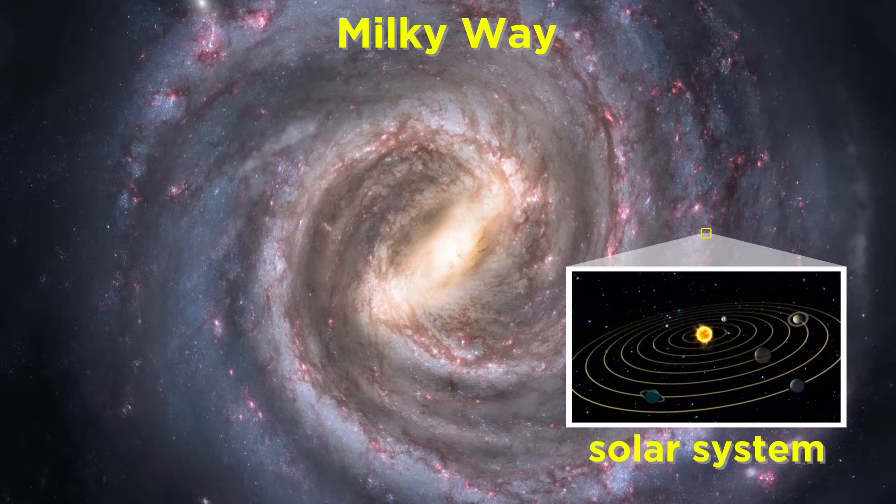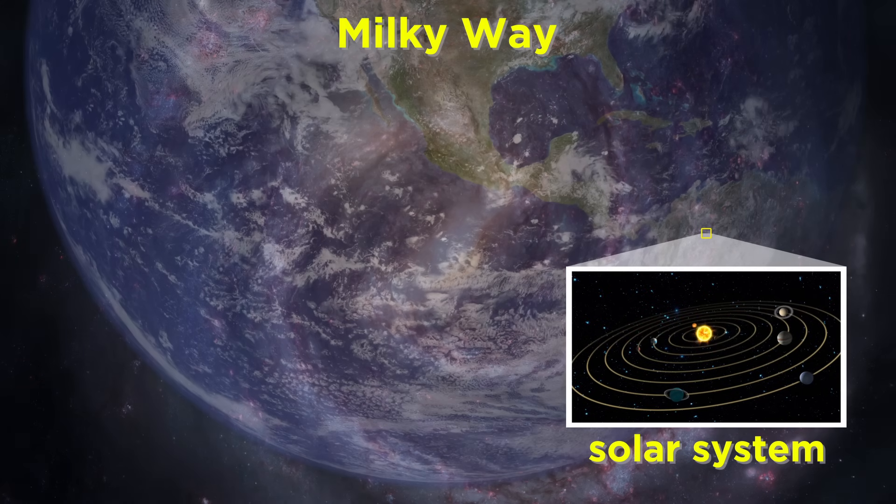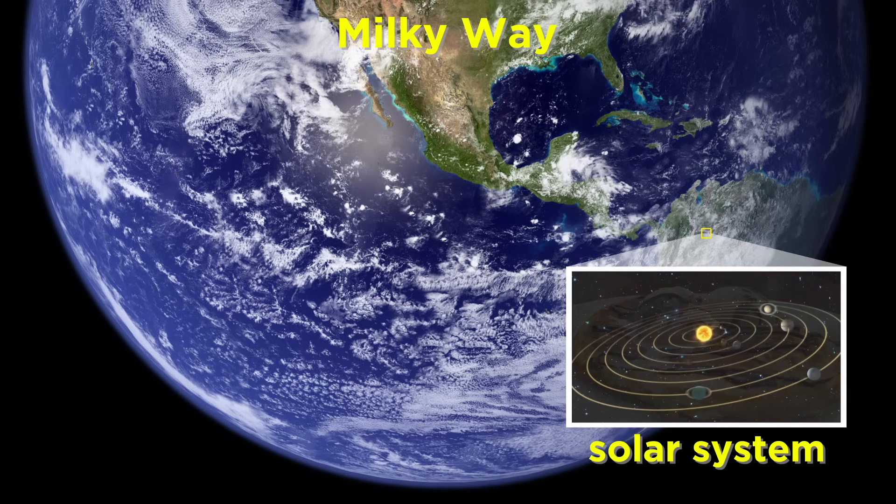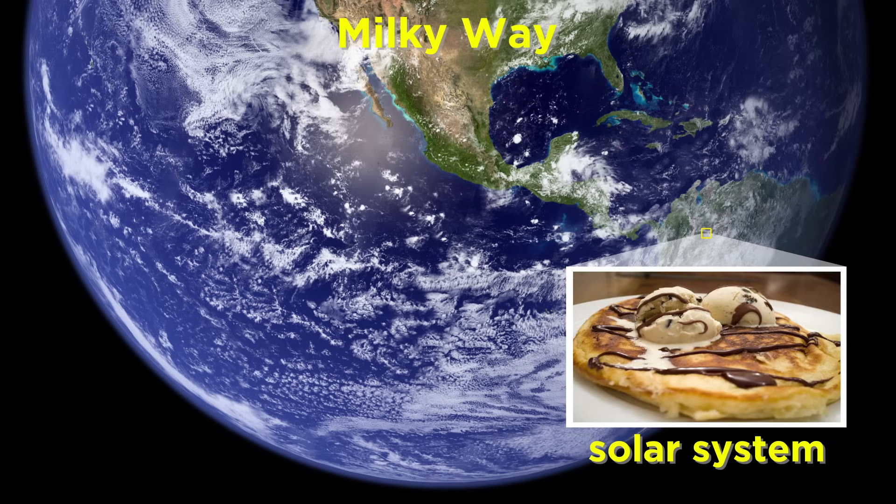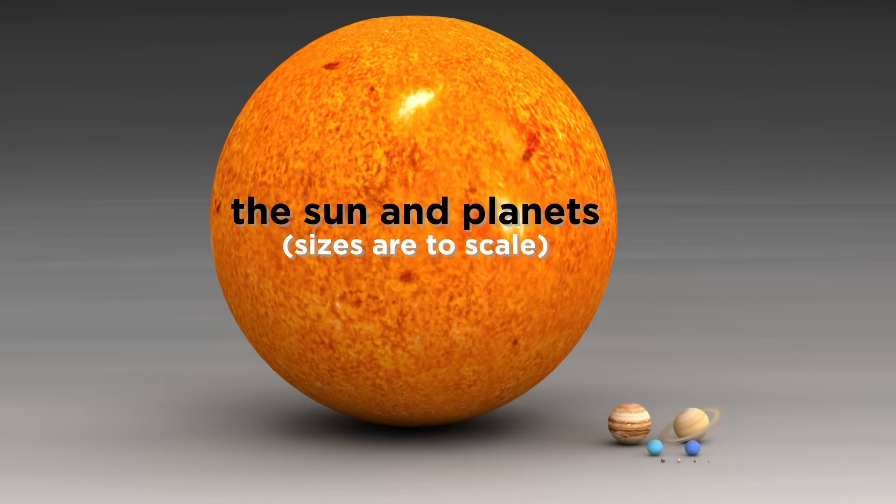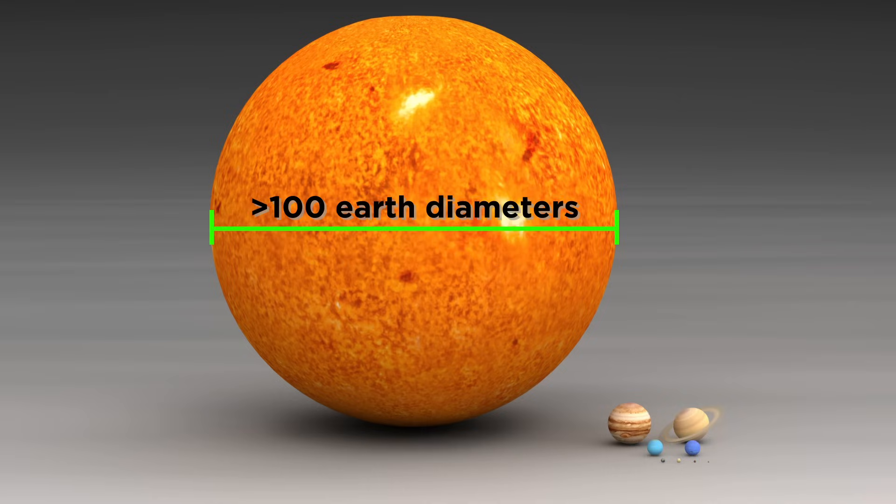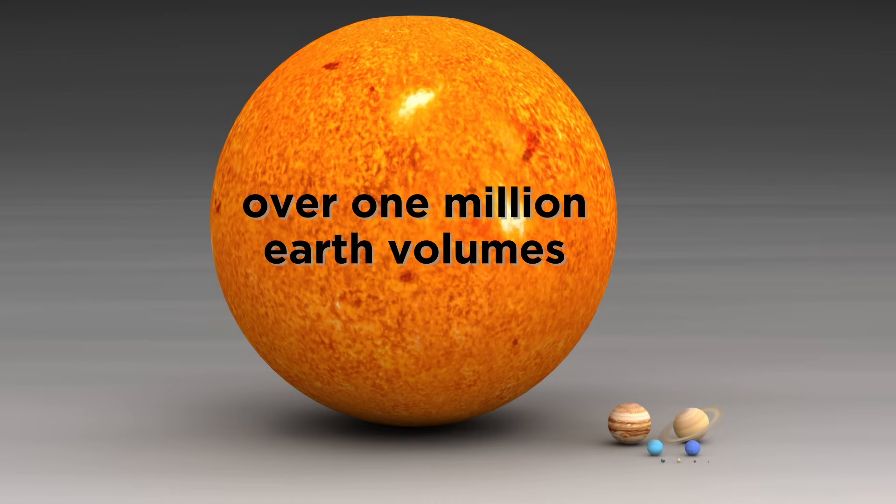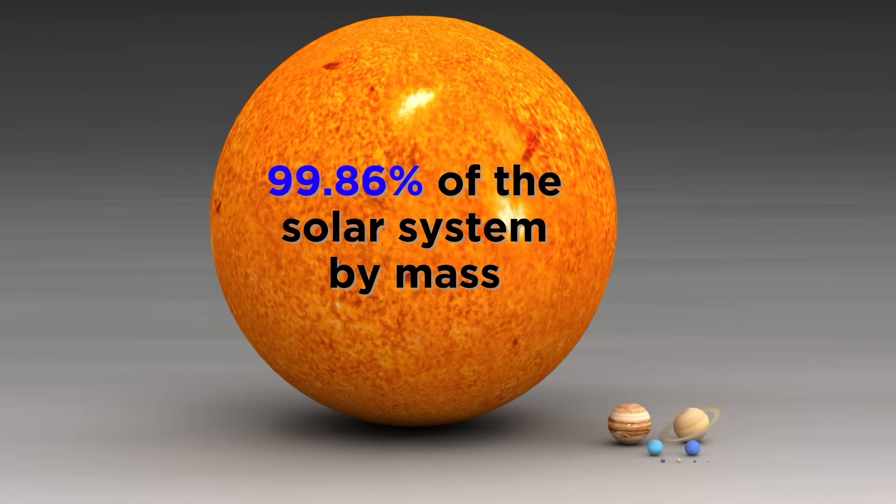Relative to the Milky Way, the solar system is minuscule. If the galaxy were shrunk down to the size of the earth, the solar system would be the size of a pancake. But to now look at the solar system as a whole and all the objects in it, we see that relative to all the planets, the sun is absolutely immense. Its diameter is more than a hundred times greater than that of the earth, which means it would take over a million earths to fill up the sun. The sun makes up about 99.86% of the mass of the solar system, so it really calls the shots, and most of the planets maintain near-circular orbits around it.